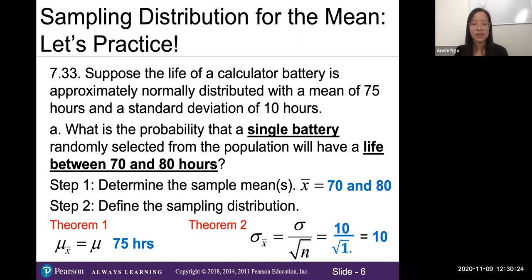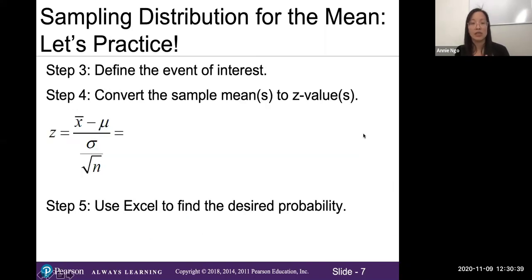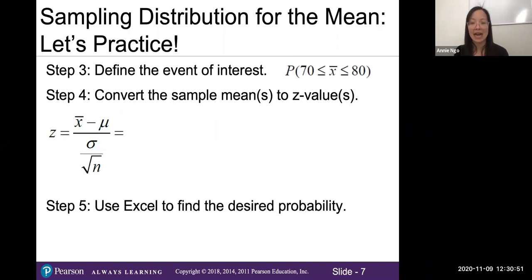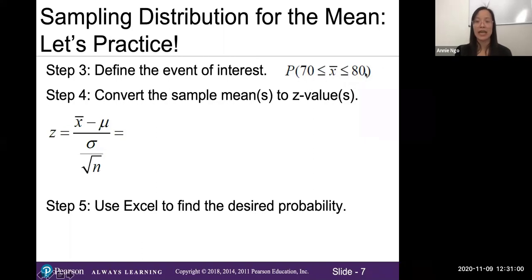Those are the variables we need before getting into our formulas. Step three: define the event of interest. From part A, we want the probability that our sample mean x-bar is between 70 and 80 hours. We now have to convert each of our sample means into a z-value.